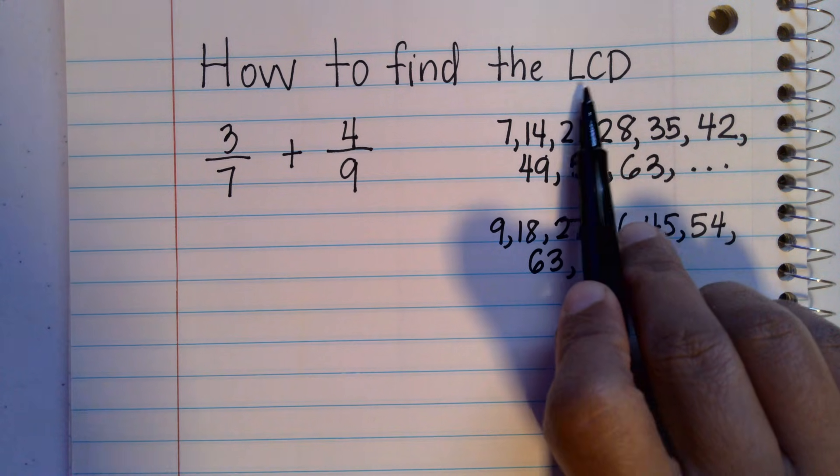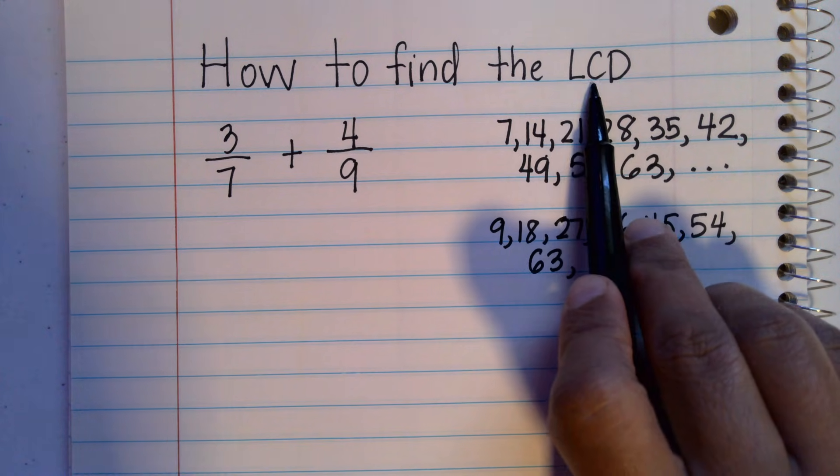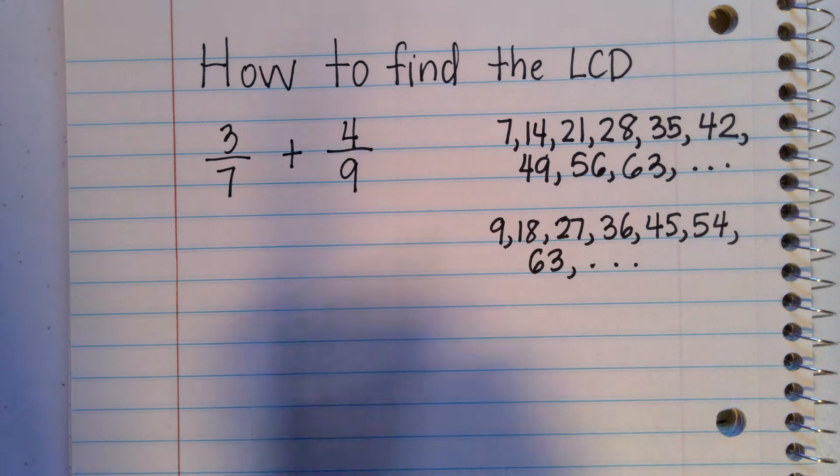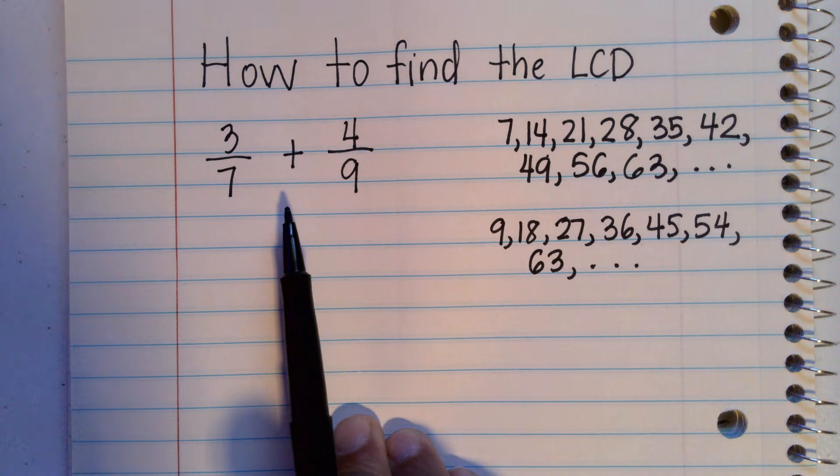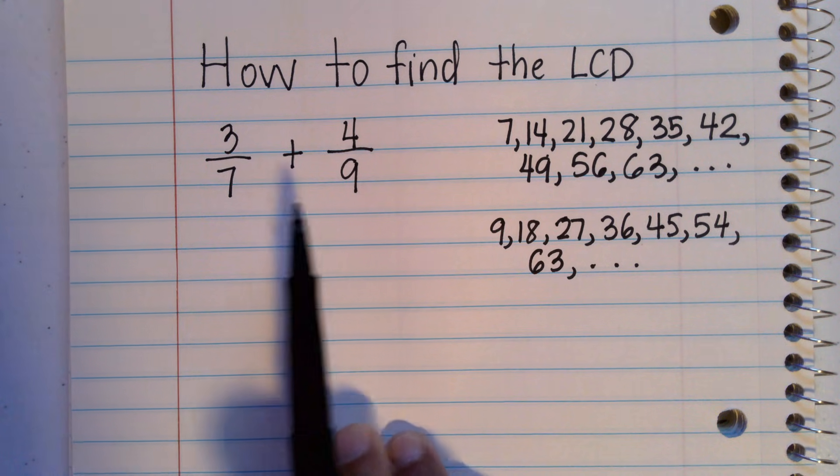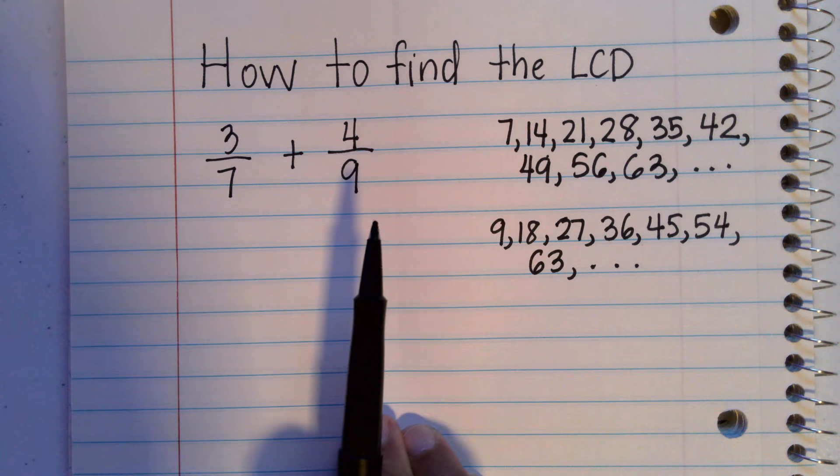First, what is an LCD? LCD is the least common denominator. When you are adding or subtracting fractions, whether they are signed fractions or not, and their denominators are different, the first thing you have to do is to find the LCD.